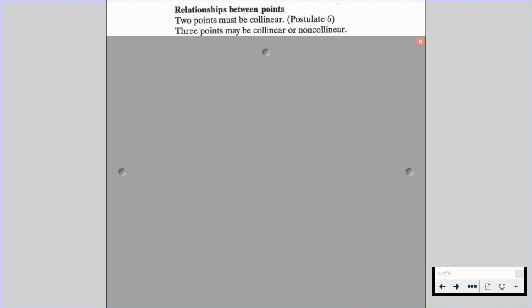Three points may be collinear or non-collinear. It's possible for three points to be both. Three points must be coplanar. Three points determine a plane.